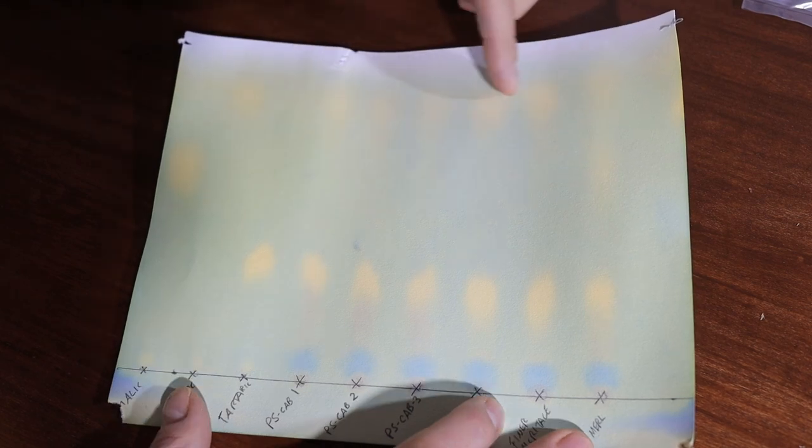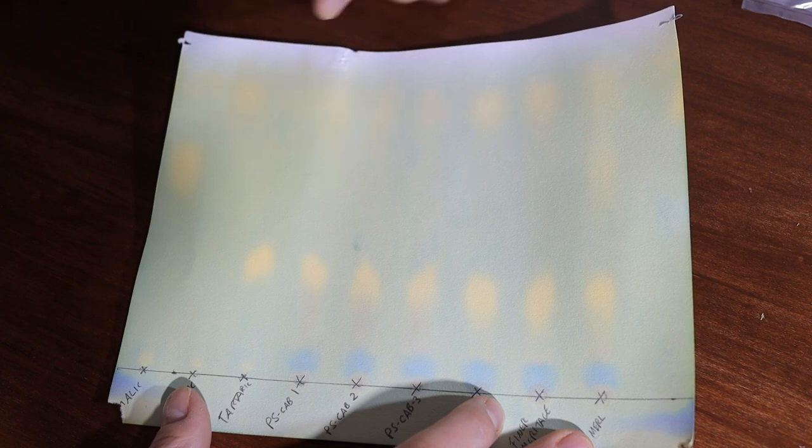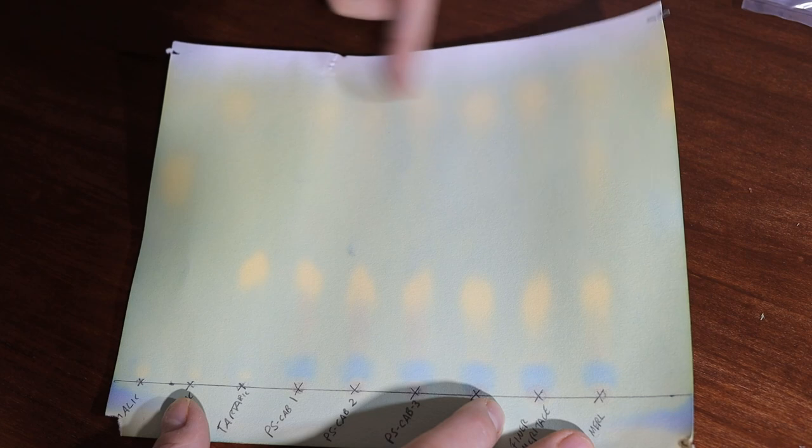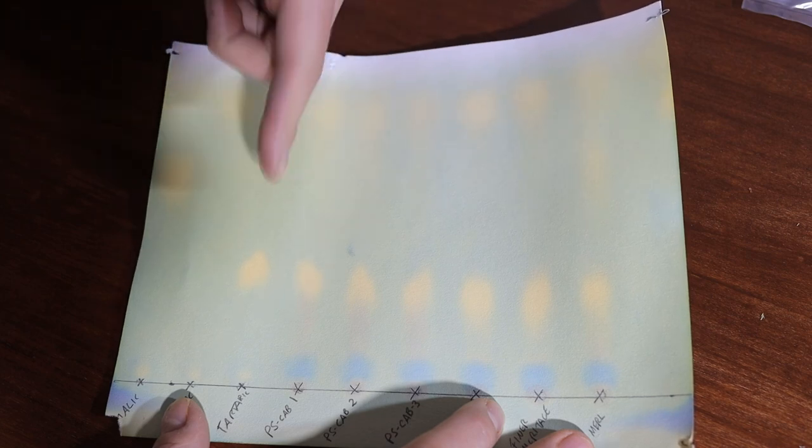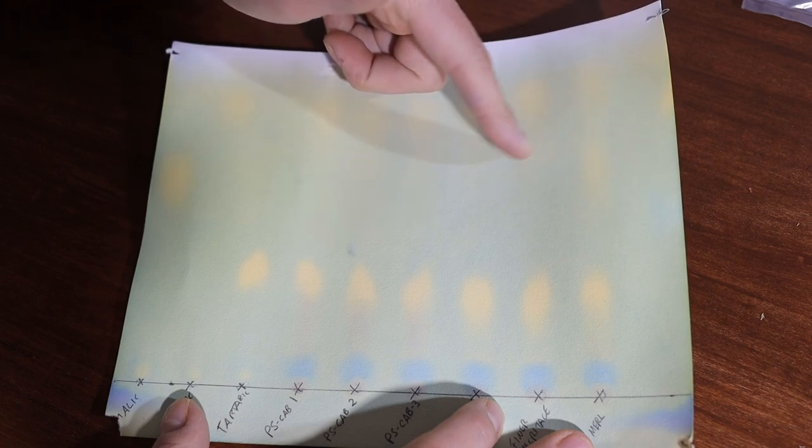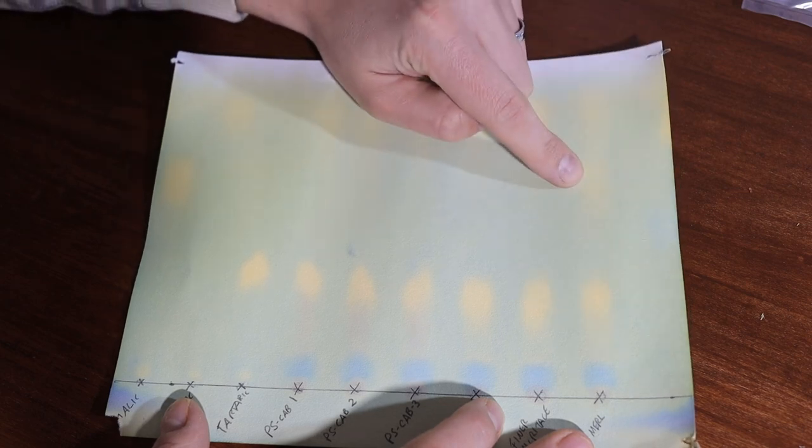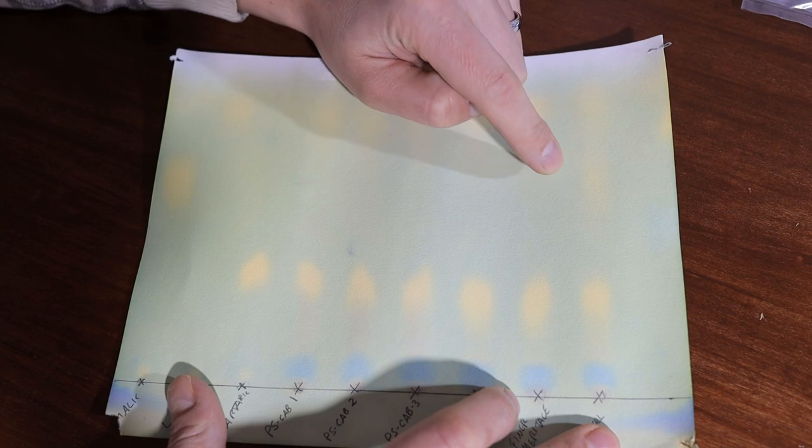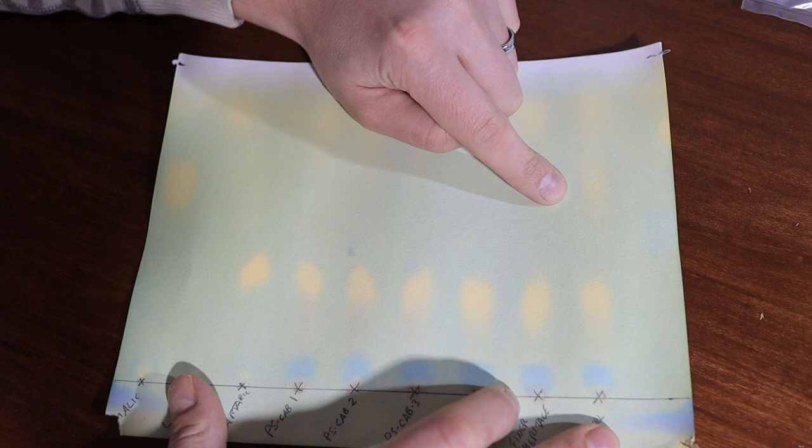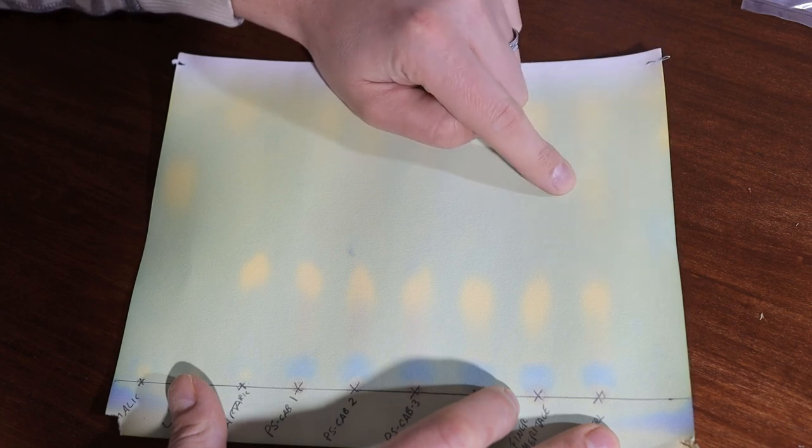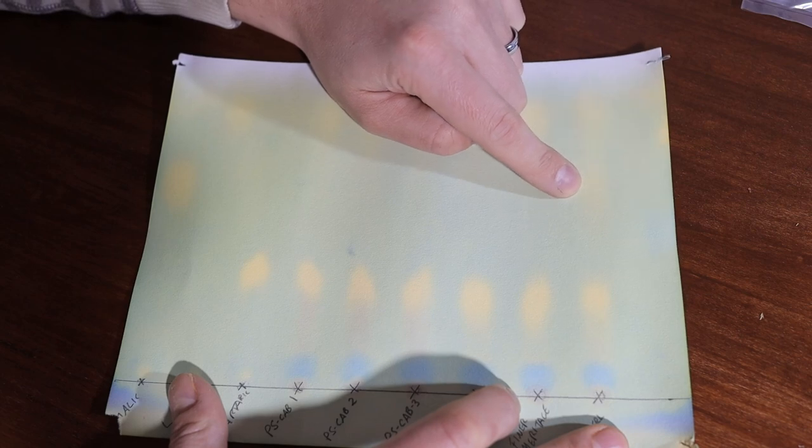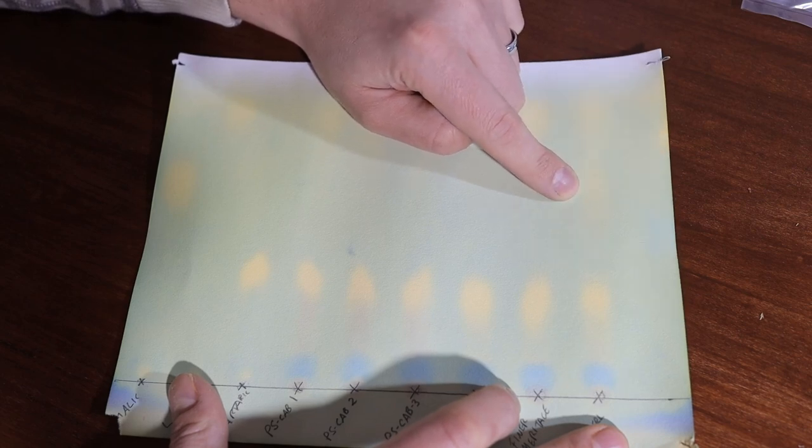So these wines here are going to be bottle stable in the sense that they're not going to go through malolactic fermentation in the bottle. There's no malic acid left for that bacteria to eat. And this wine, I need to either be careful with it in the sense that I make sure that it's got an adequate sulfite dose when it goes into the bottle. Or I need to try to get this wine to complete malolactic fermentation.